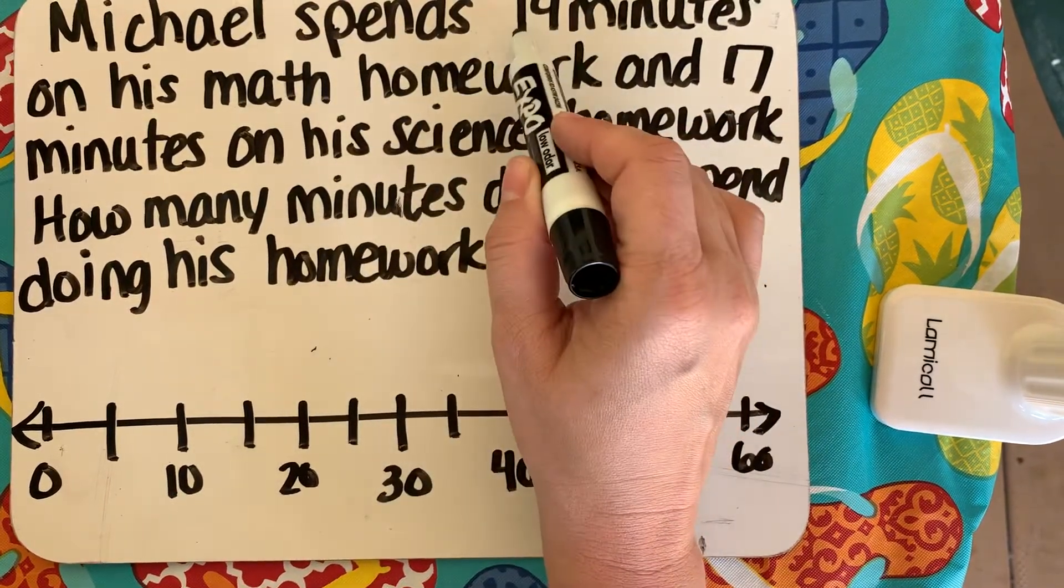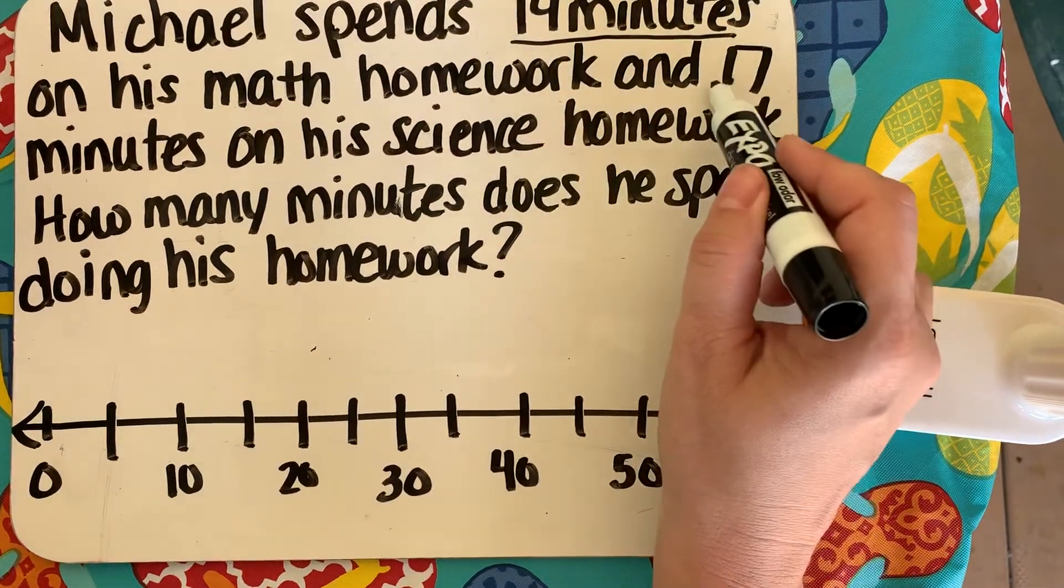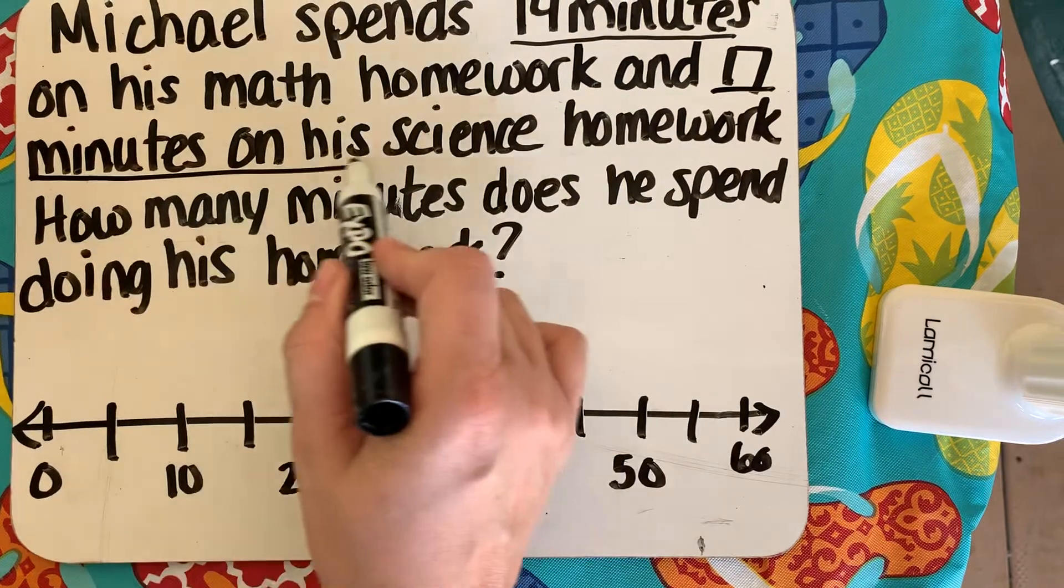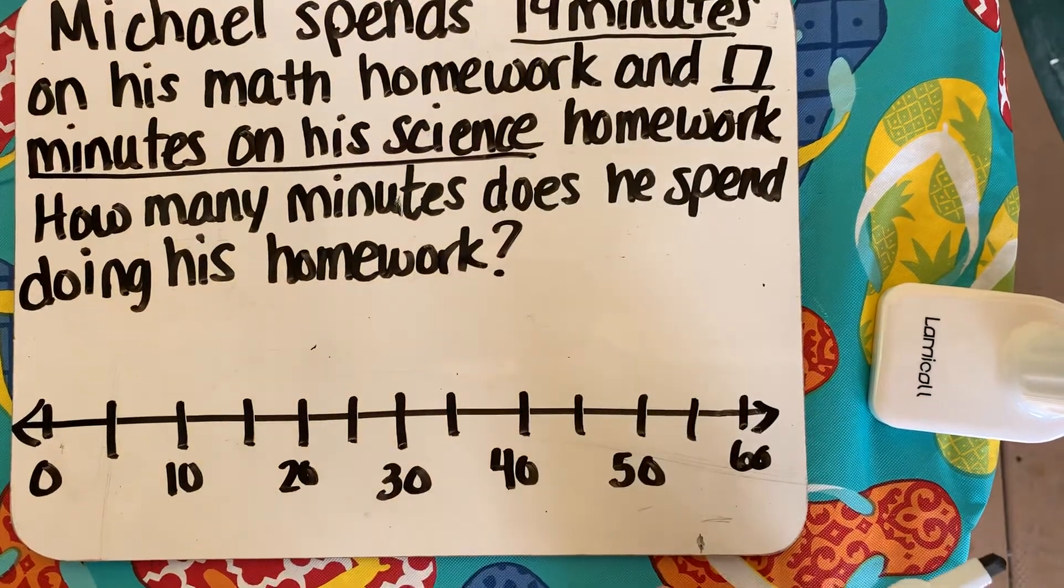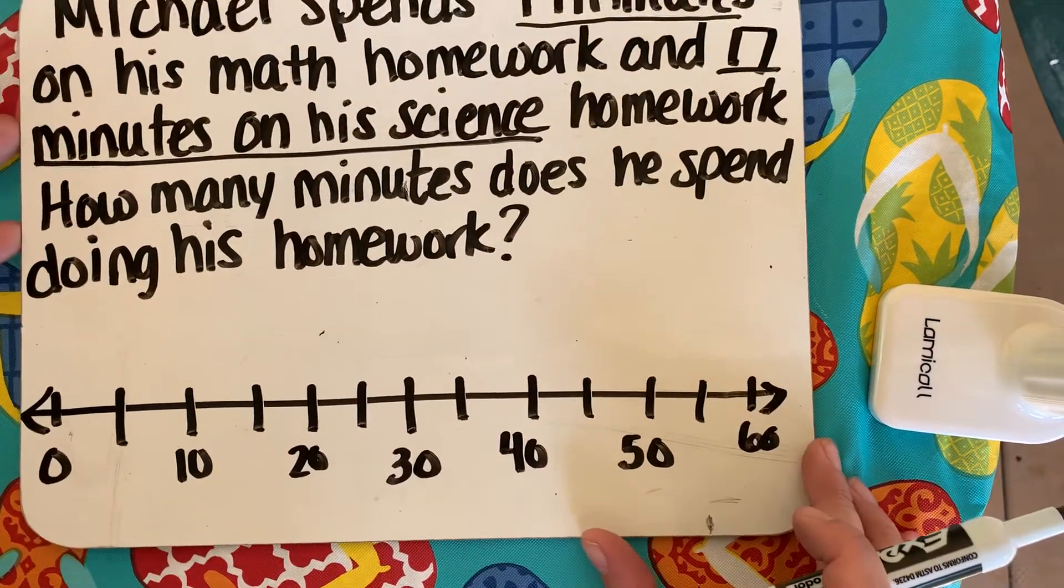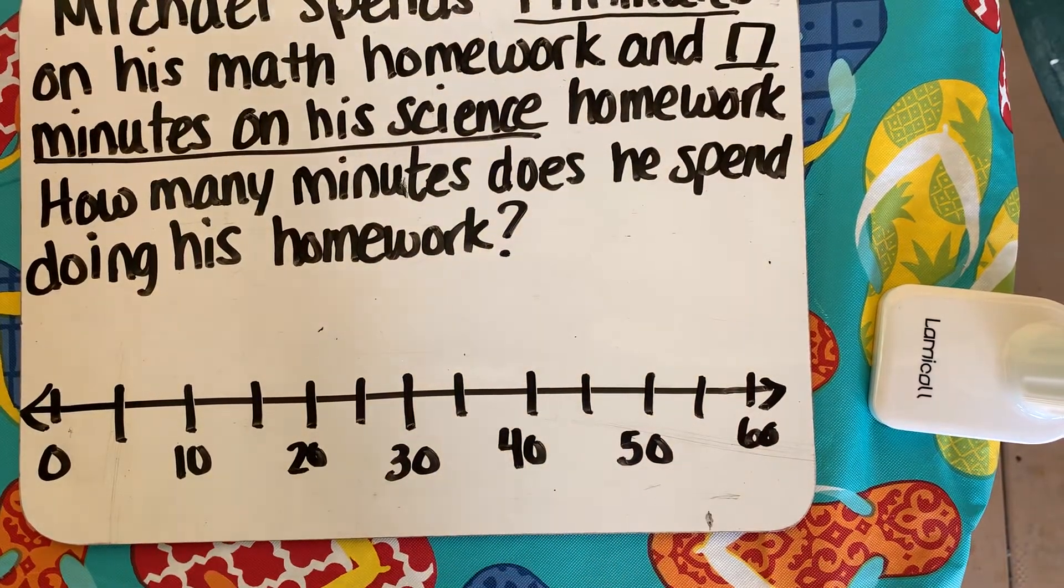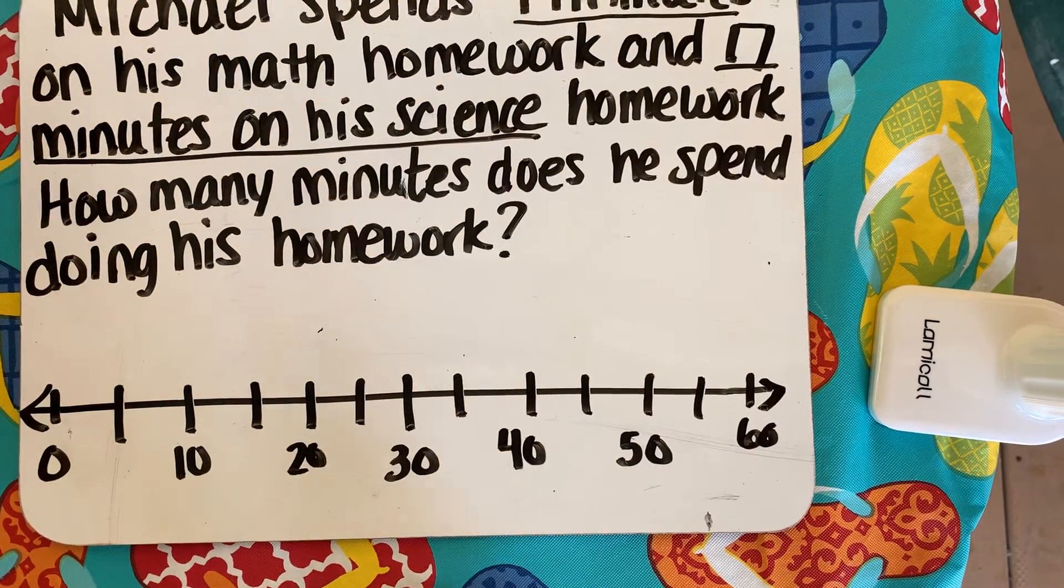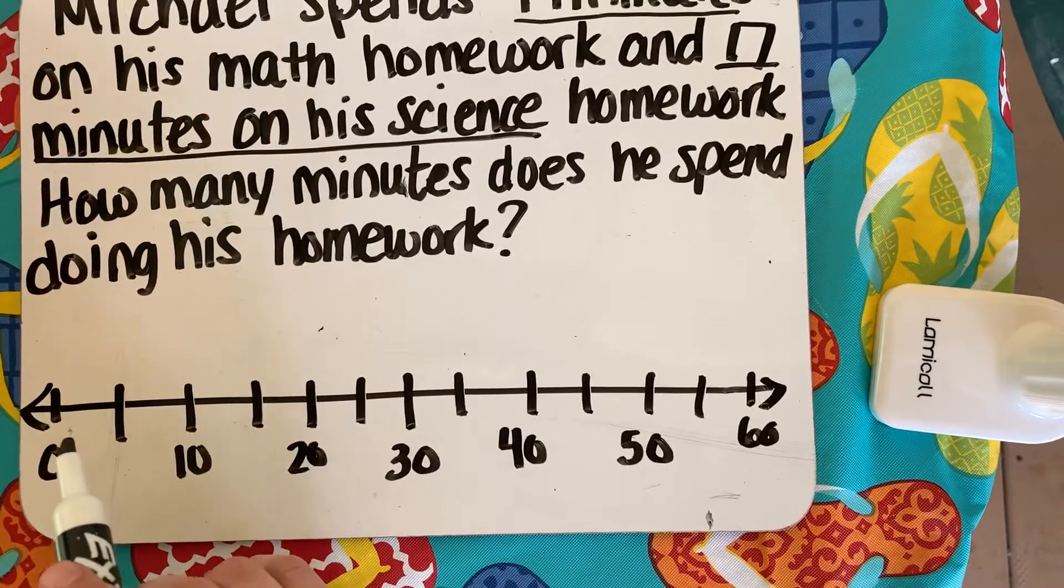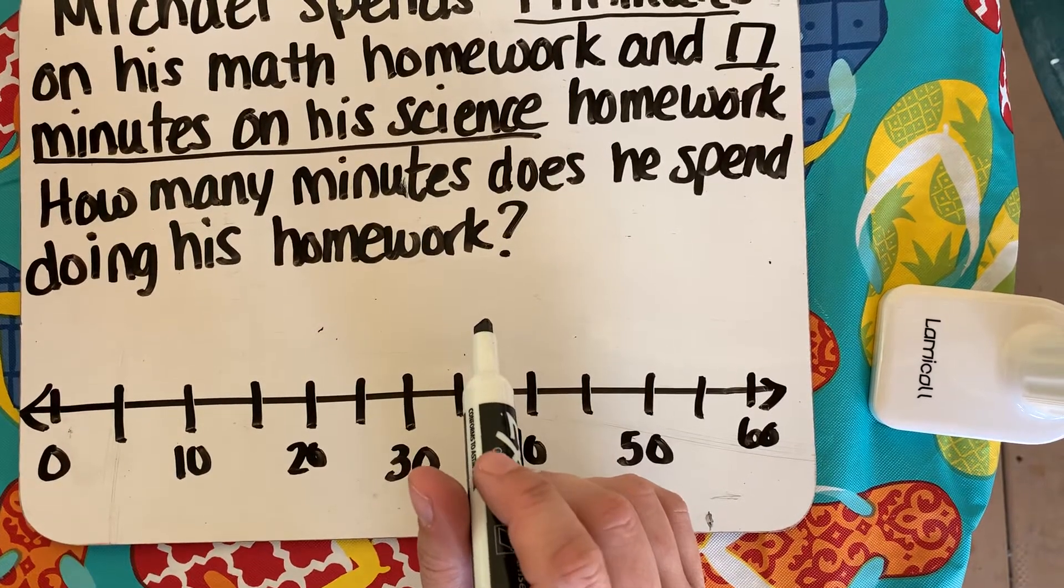So let's go back. Michael spends 19 minutes on his math homework and 17 minutes on his science homework. How many minutes does he spend doing his homework? So this is a great time for us to use the pebbles and the rocks and the hills method. So just a heads up on that. That's what I'm gonna be doing.